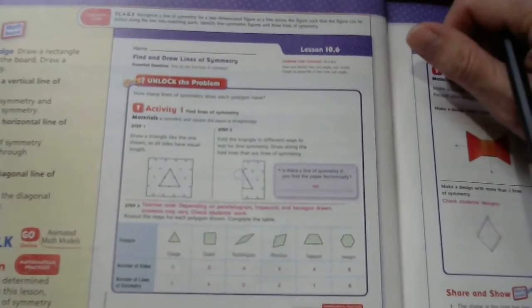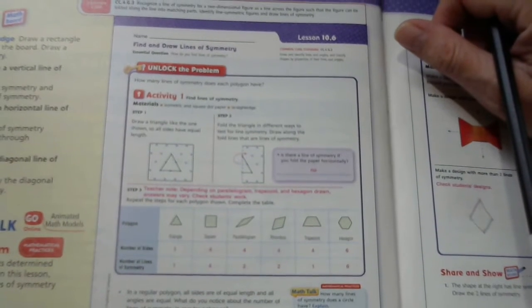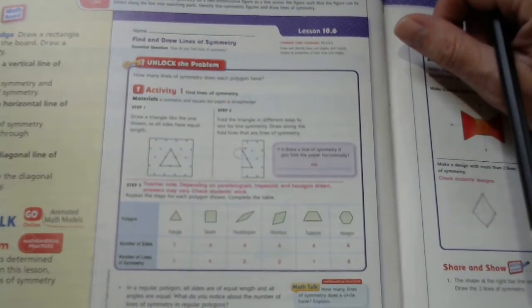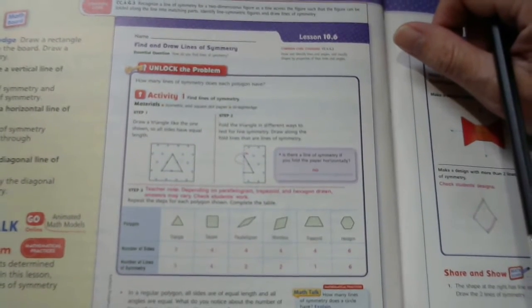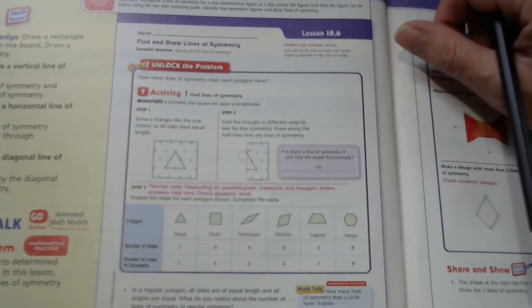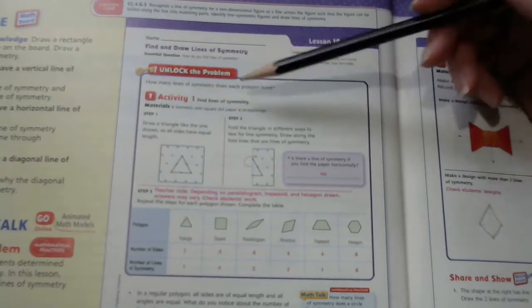Good morning fourth grade. On Lesson 10-6 today we will be talking about how to find and draw lines of symmetry. How do you find lines of symmetry? Well, how many lines of symmetry does each polygon have? Look at our activity.